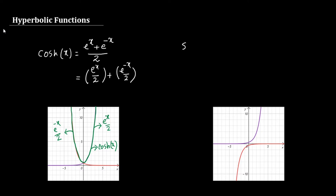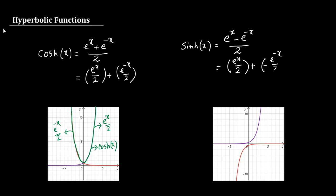The hyperbolic sine function is defined as sinh(x) = (e^x - e^(-x)) / 2. It is again a sum of the two functions e^x / 2 and -e^(-x) / 2. Looking at the graphs, these are the two component graphs, and hyperbolic sine x will be their sum, which will look like this.